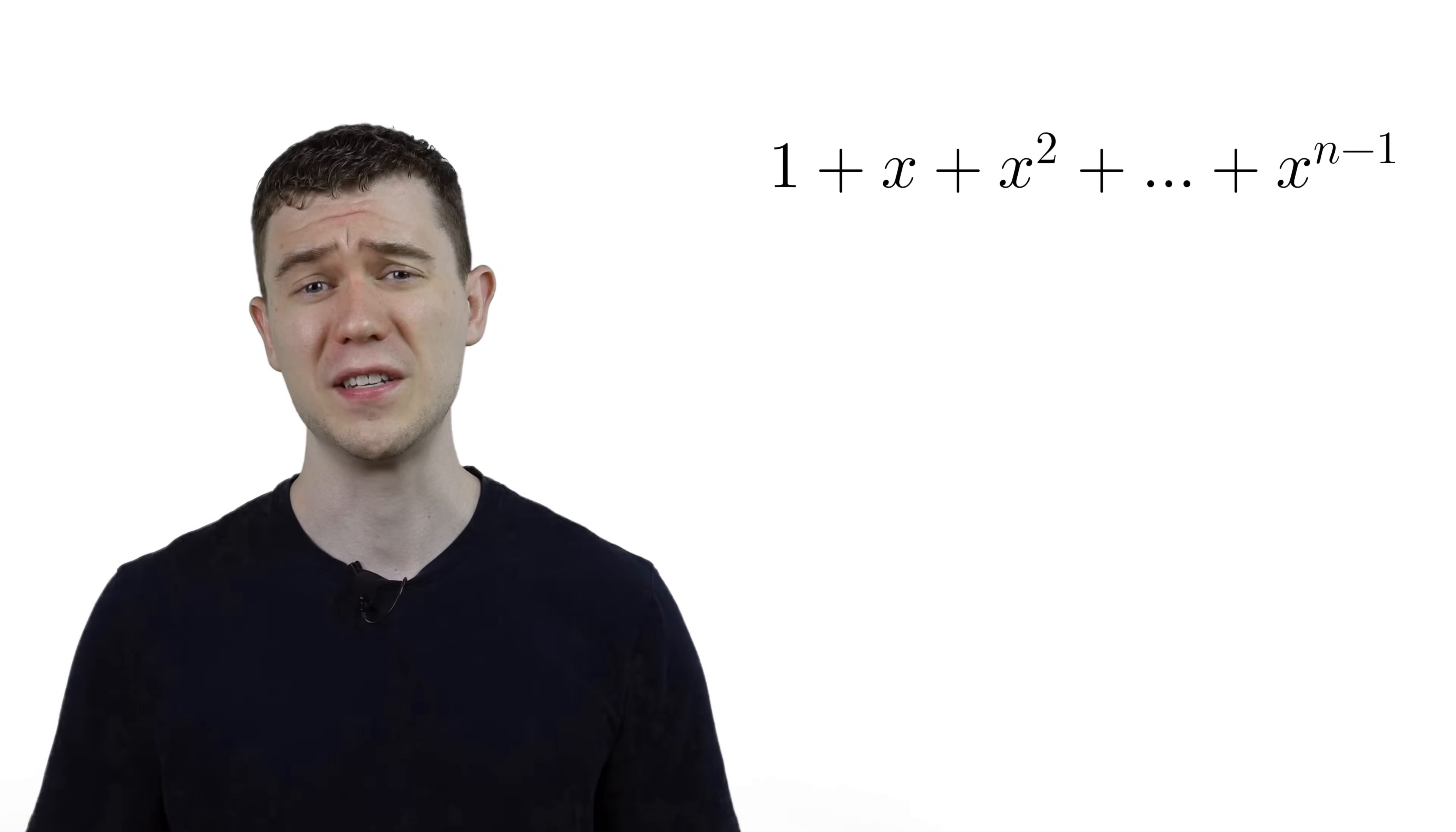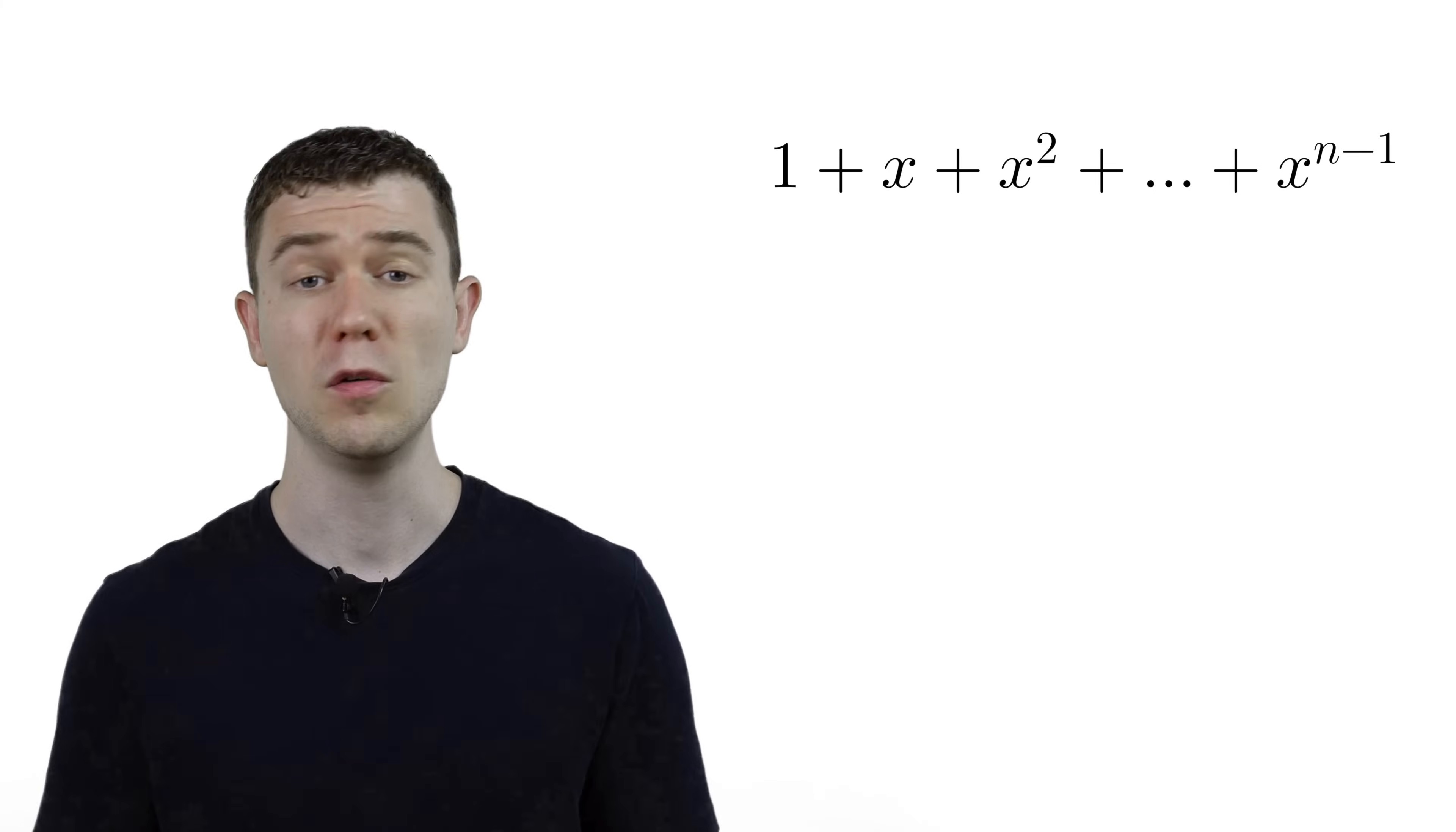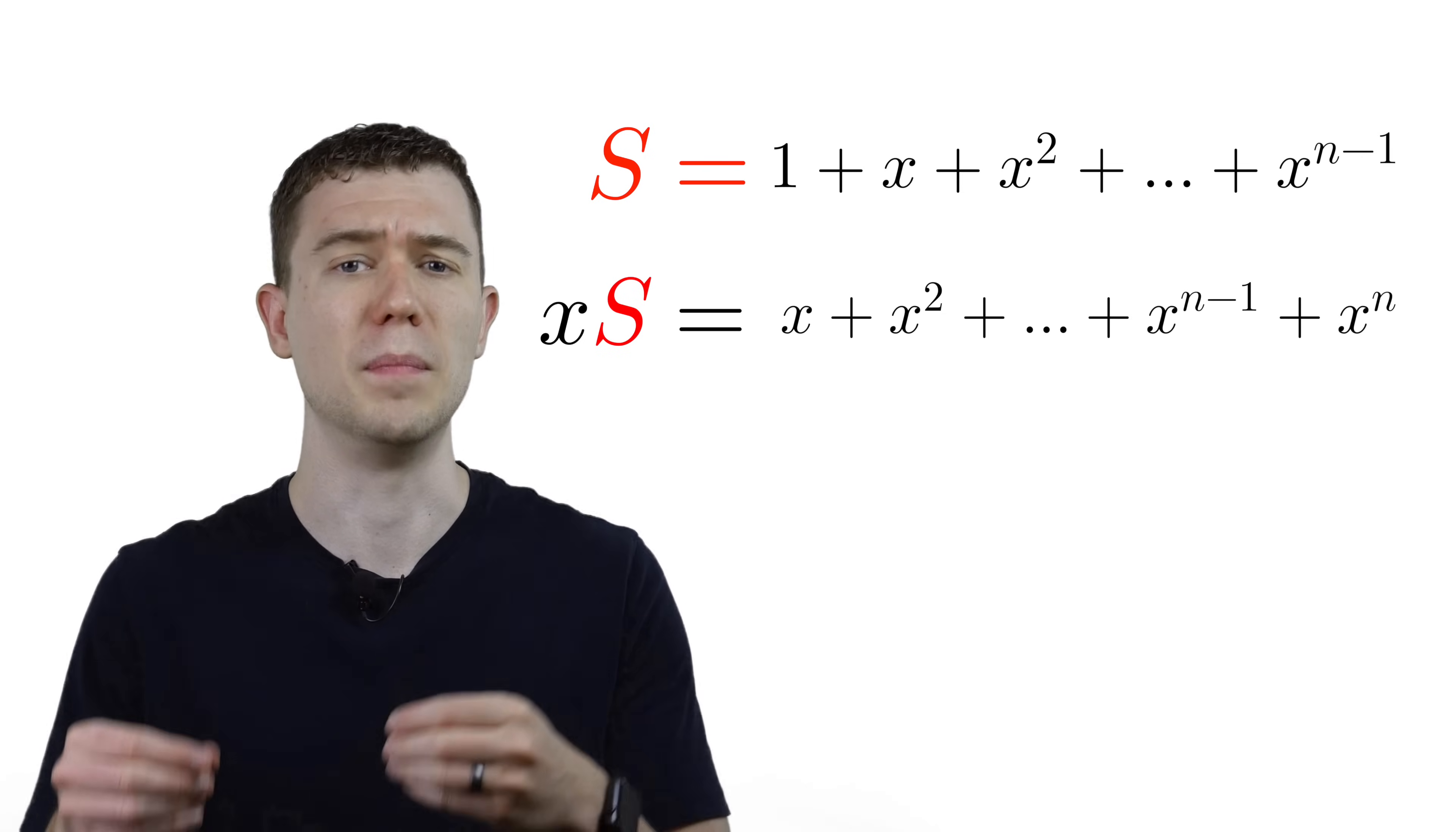Let's start with this sum. You might call it a finite geometric series with n terms. To figure out what this is supposed to be, we'll just call it s. If we multiplied s by x, it would bump the powers of x's by 1.